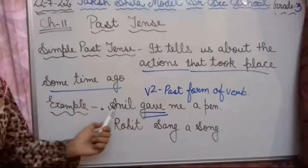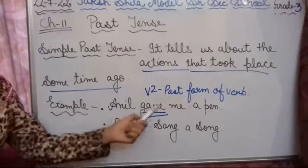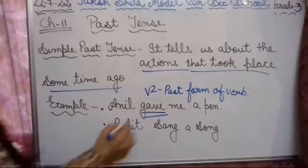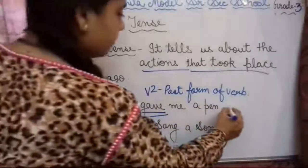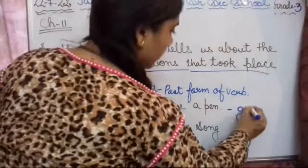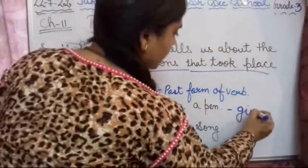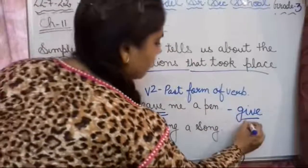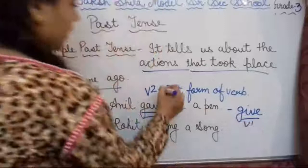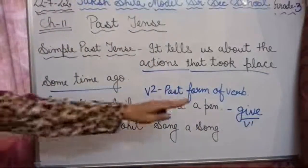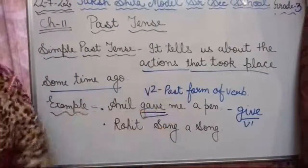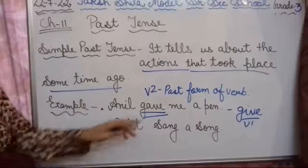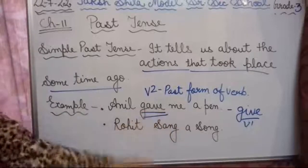The verb 'give' has three forms: give, gave, given. 'Give' is the first form, 'gave' is the past form (V2), and 'given' is the third form.